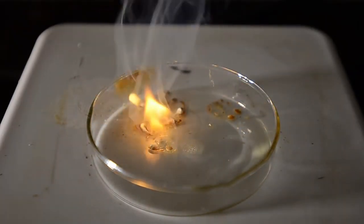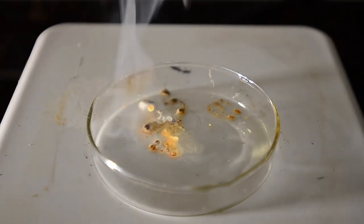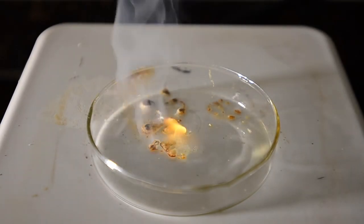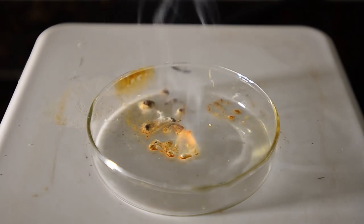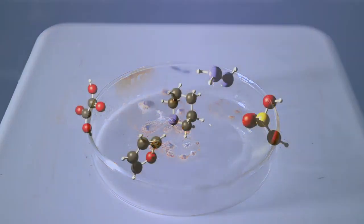The hot plate is only at about 150 degrees C, so this is a good warning about the reactivity of this compound. Huge clouds of white phosphorous pentoxide are generated as the phosphine gas produced spontaneously combusts in air. Stay tuned.